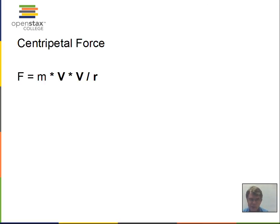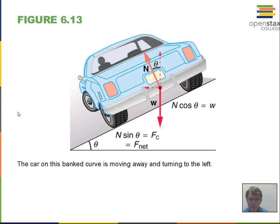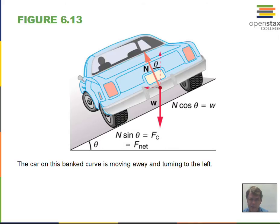Banked roads give some help to friction: the normal force has a component towards the center of the circle. The normal force is perpendicular to the roadway. NASCAR takes advantage of this to help cars go around corners at almost 200 miles per hour, where banking on the track helps the car turn, alongside friction.